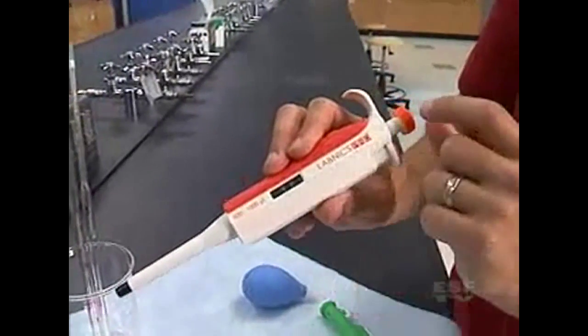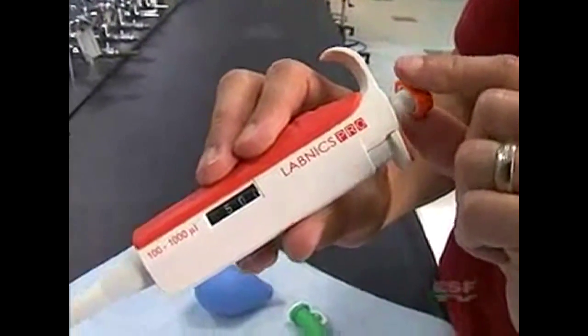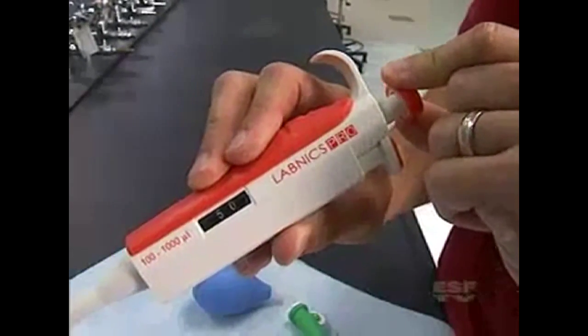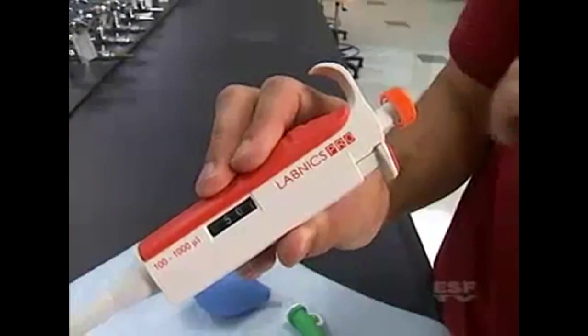And to change these numbers all we have to do is rotate the top knob and you can see that we can rotate up to 520, 515, 510 or 500 microliters. In this case we want 500.